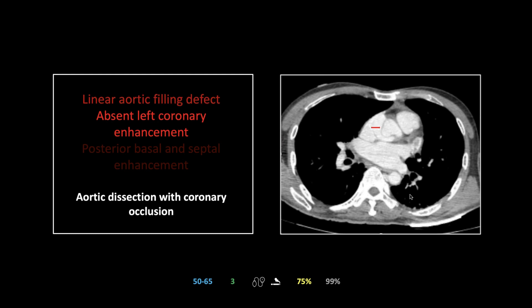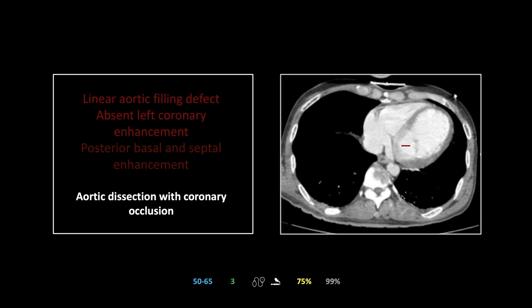This case shows the great complication of aortic dissections. You can see the linear filling defect, and look at the left posterior aspect of the aortic root — that linear filling defect is passing right across the left coronary ostium. The left main and LAD show no enhancement. There is normal enhancement of the myocardium in the posterior basal and basal septum, but the rest of the left ventricle is hypodense and under-perfused — the distribution of that left coronary.